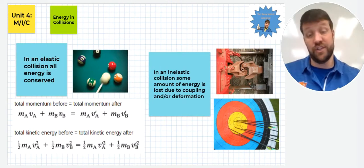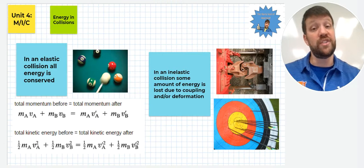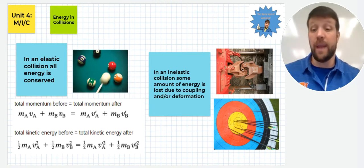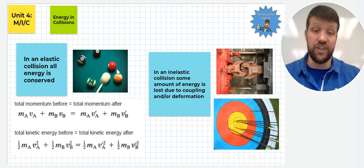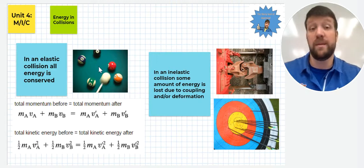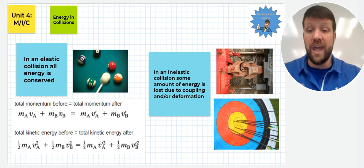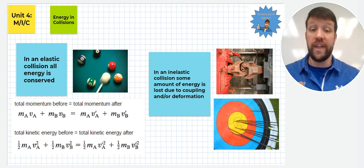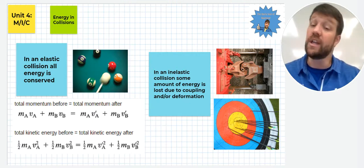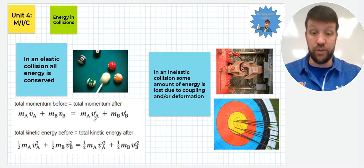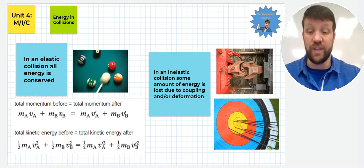Energy is present in collisions as well, and it's going to be present in different ways depending on those two different types of collisions. In an elastic collision, and one of the most common examples is playing pool—you see the pool balls right here—in an elastic collision, all energy, specifically the kinetic energy, is conserved. So the total momentum before will equal the total momentum after.